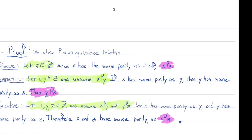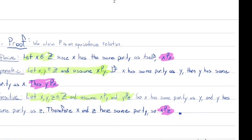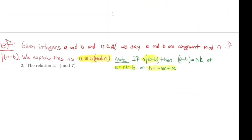Student question: For each one of these proofs, do we have to prove that it's reflexive, symmetric, and transitive? Yes, correct — for each proof of an equivalence relation you need to show all three properties.